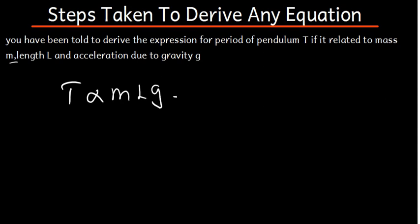Now from here, you are going to raise the quantities to unknown powers of your choice. In this case, I am going to use X, Y, and Z. So I am going to raise M to X, L to Y, and G to Z. This is going to be our formula — this is what we call step 1.